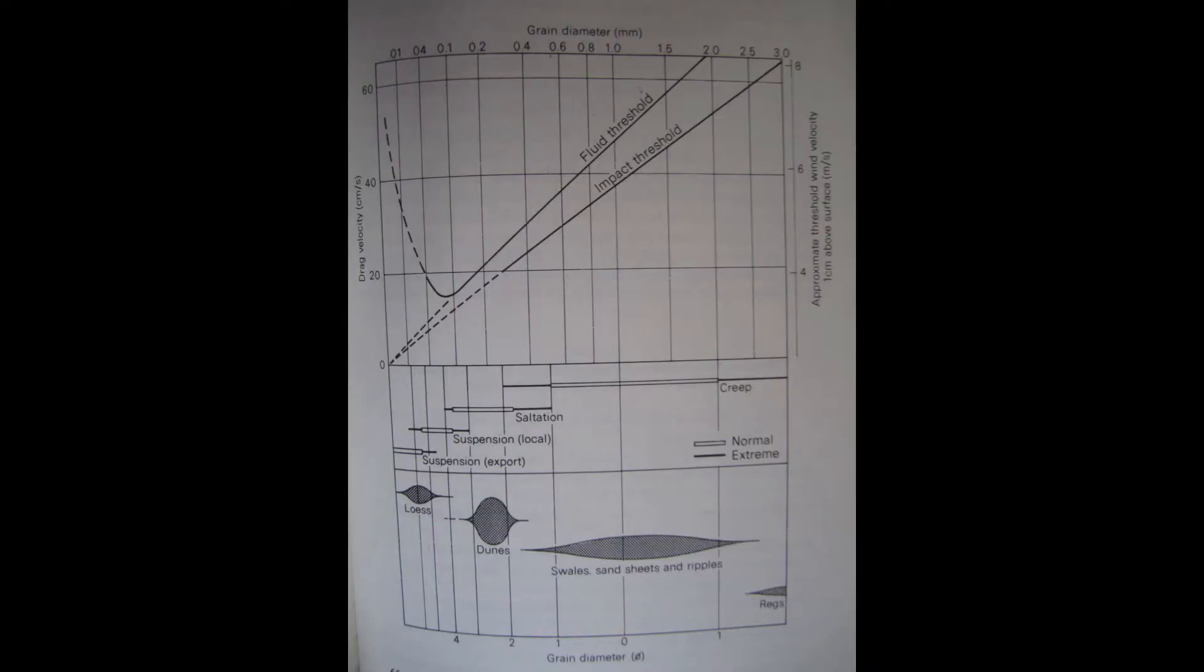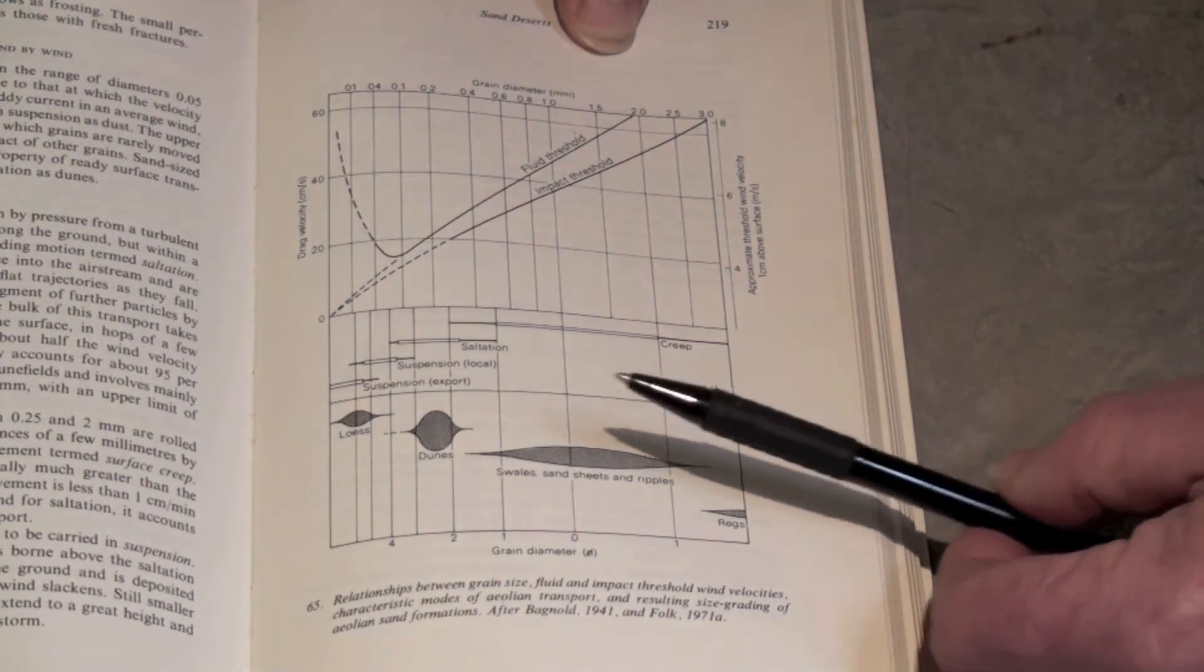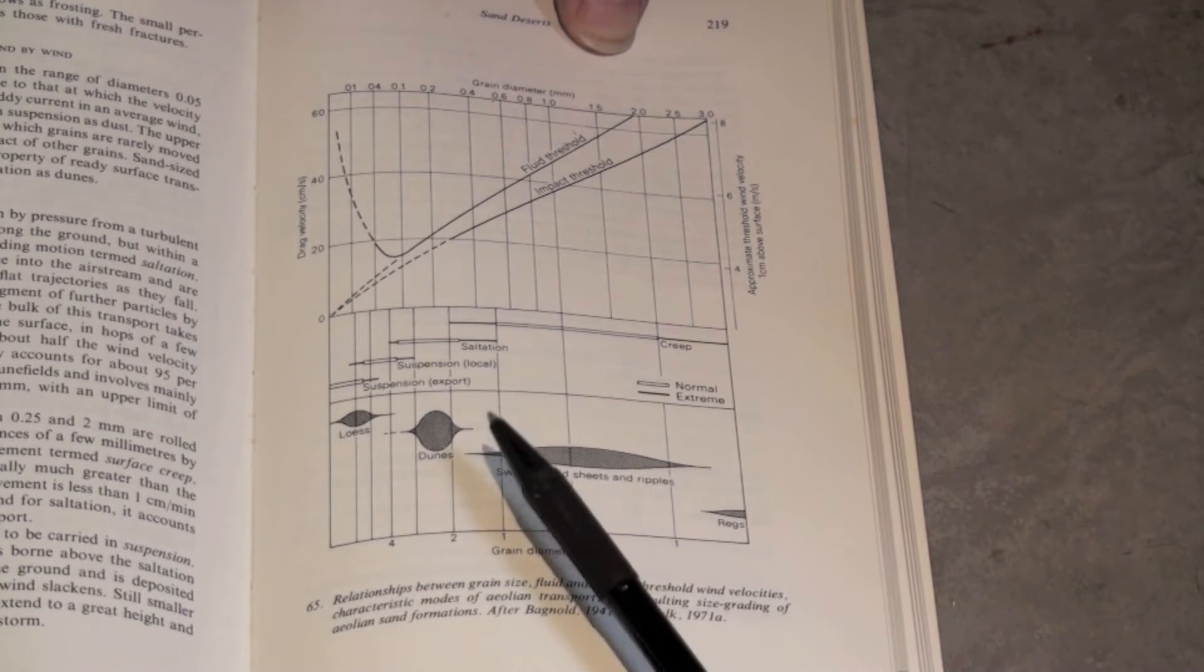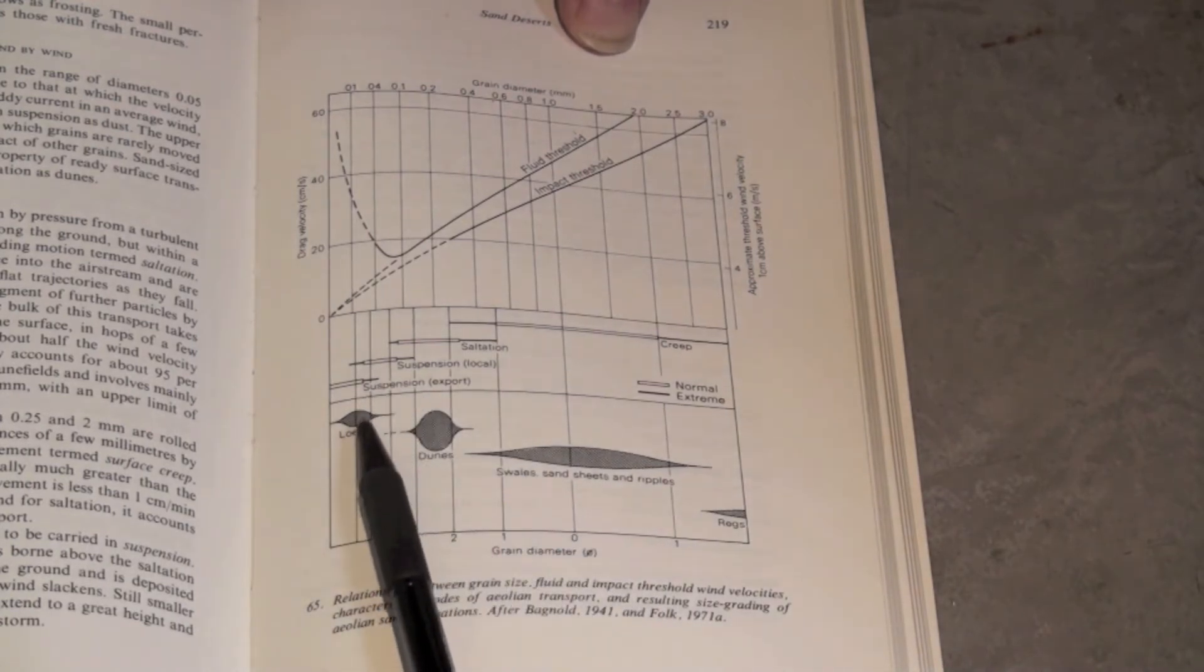This diagram is from Mabbitt's book on desert geomorphology. It's a fairly classic diagram which shows the effect of transport, or the interrelation between transport and particle size for aeolian sand. Fairly coarse sand is moved as creep, fine sand is moved by saltation as dunes, and silts and clays are moved in suspension as wind-borne dust.